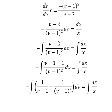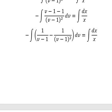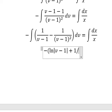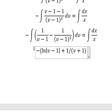And now we get the final answer. The integral of 1 over v minus 1. You will get ln of the absolute value of v minus 1. The integral of negative 1 over v minus 1 to the power of 2. You will get positive 1 over v plus 1.